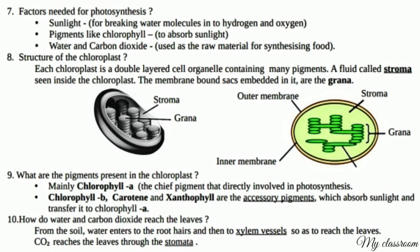How do water and carbon dioxide reach the leaves? From the soil, water enters the root hairs and then travels to xylem vessels so as to reach the leaves. Carbon dioxide reaches the leaves through the stomata.